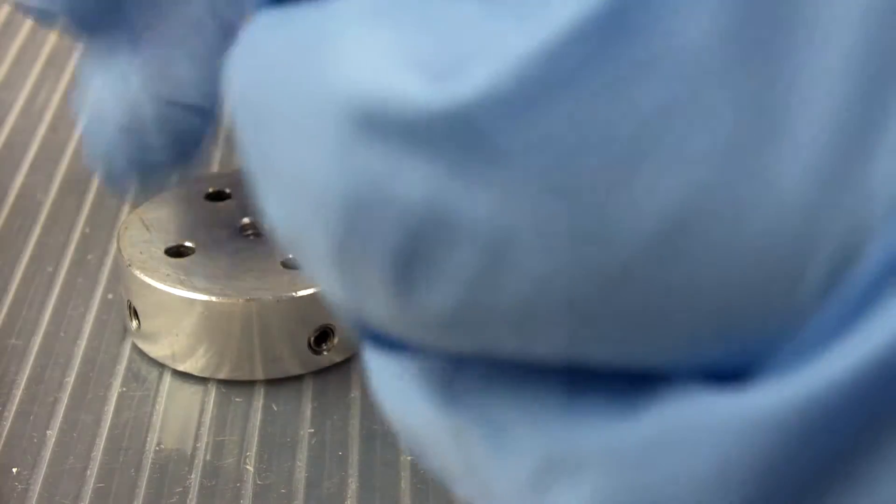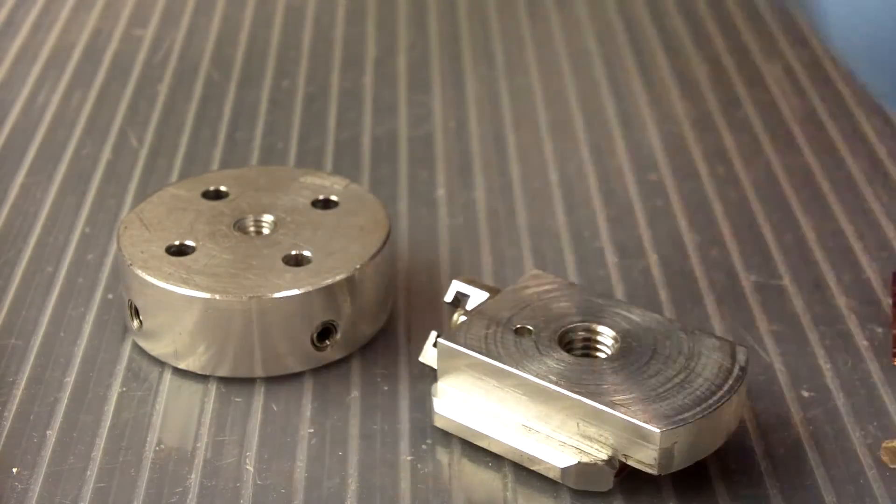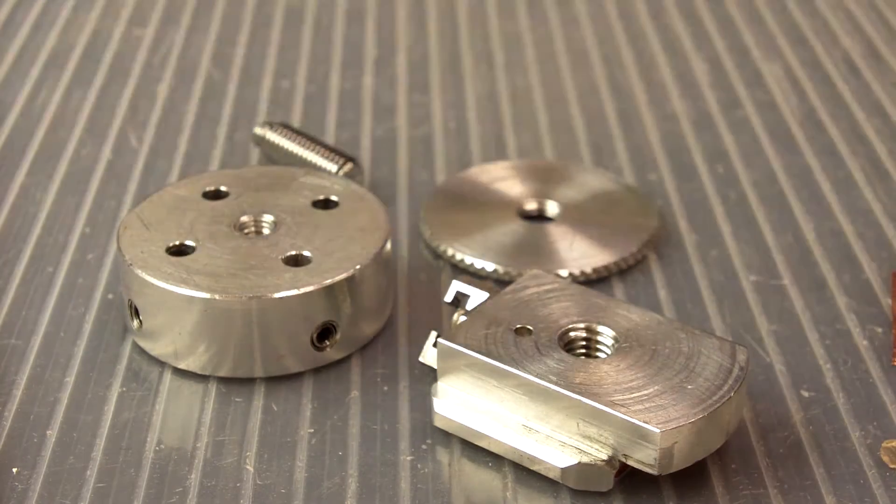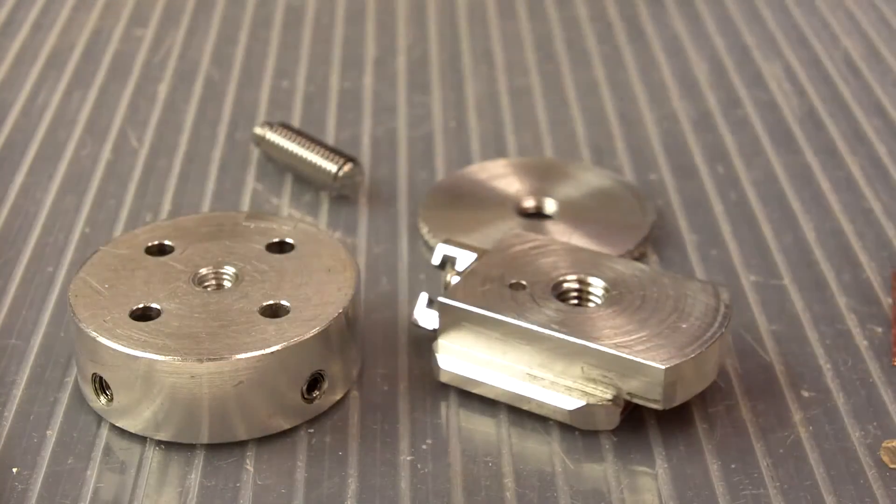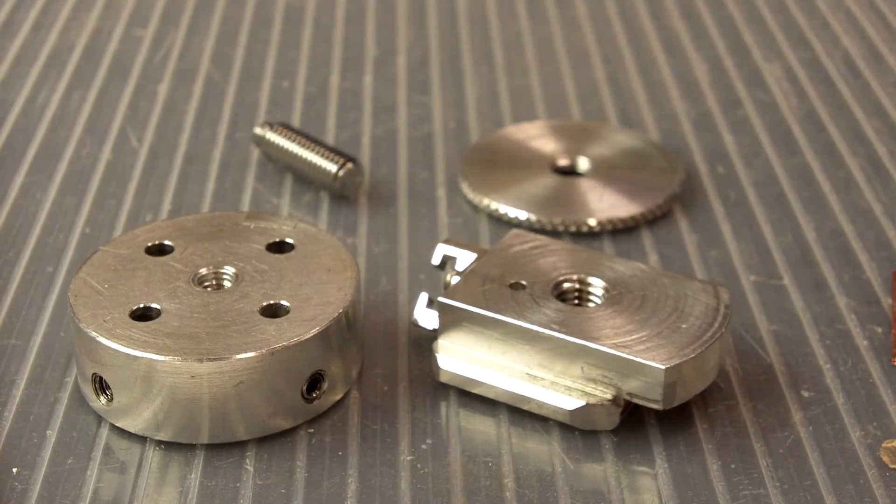And now if I want to disassemble the sample holder, we should be able to see that it comes apart again very easily. No problem whatsoever. It should go together very easily and it should come apart again very easily.